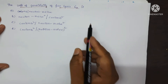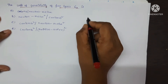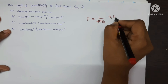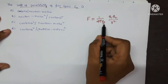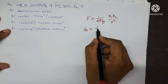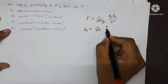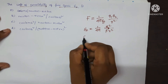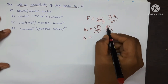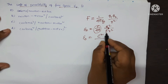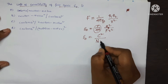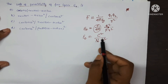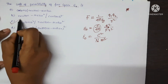The unit of permittivity of free space. The force between two charges is given by F equals 1 over 4π·ε₀ into Q1·Q2 upon R square. We have to find the unit for ε₀. So ε₀ equals Q1·Q2 upon F·R square. R is the distance between two charges, so meter square. The unit is Coulomb square upon Newton meter square. C is the correct option.